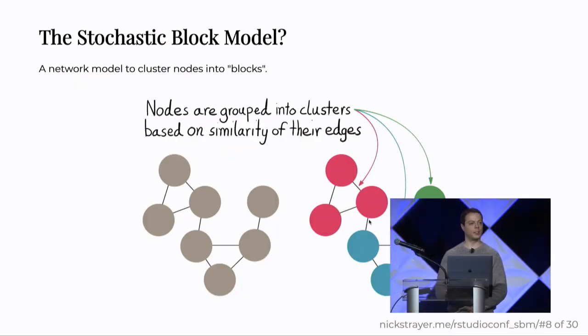And then also stochastic block model. This is a phrase I'm going to use a bunch, and I'm also going to abbreviate it as SBM. This is simply just a network model that clusters nodes into blocks of nodes. And these nodes are grouped by the similarity of their edges. In this example, we have this red cluster right here, and it's characterized by connections within itself. All of the nodes tend to connect to nodes that are in the same cluster.